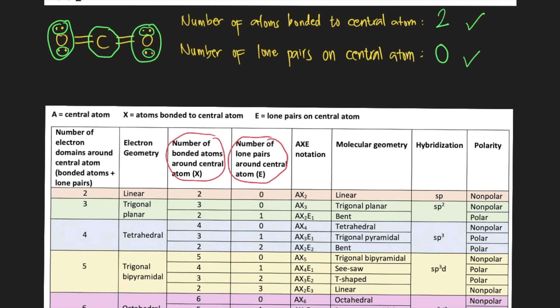Column three is the number of bonded atoms, so we have two. Column four is the number of lone pairs, which is zero. So two and zero. The electron geometry is therefore linear, and the molecular geometry is also linear. The answers to the question are linear and linear.